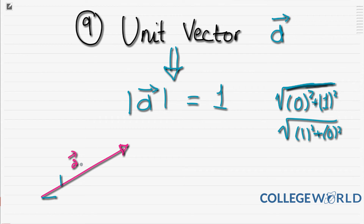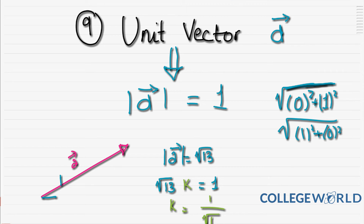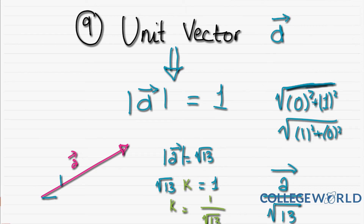A unit vector has a magnitude equal to 1. To reduce vector a — whose magnitude is √13 — into a unit vector, we need to multiply it by some value k to get 1. That k is simply 1/√13. In other words, to turn any vector into a unit vector, divide it by its own magnitude. So vector a divided by √13 gives the unit vector.